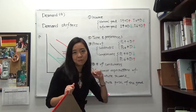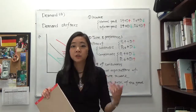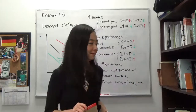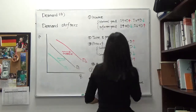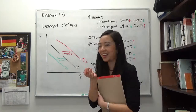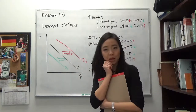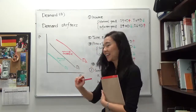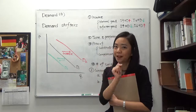Complements by definition are goods that you consume together — like computer and software, or peanut butter and jelly. For substitutes: suppose you're at the supermarket to buy cola and you observe the price of Pepsi goes up. You'll say, I'm not going to buy Pepsi today, I'm going to buy Coke instead. So if the price of Pepsi goes up, your demand for Coke is going to go up, because you're not buying Pepsi today, you're buying Coke.